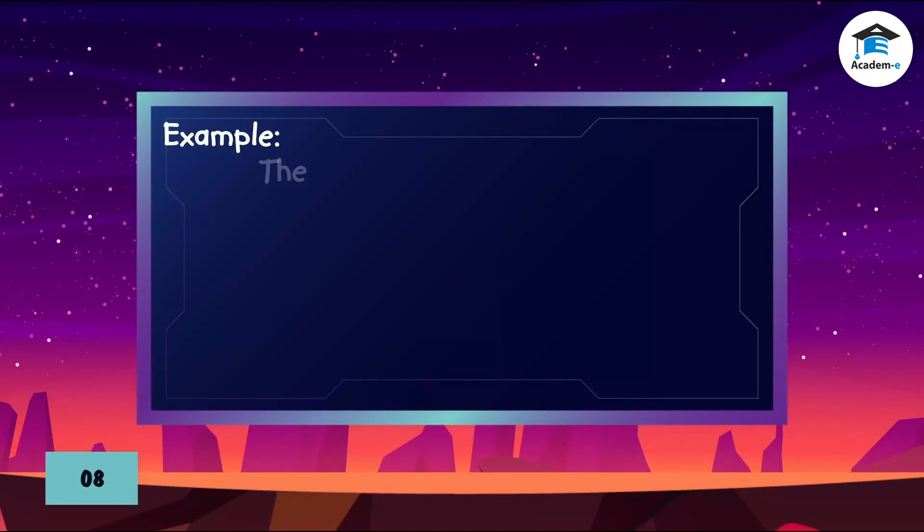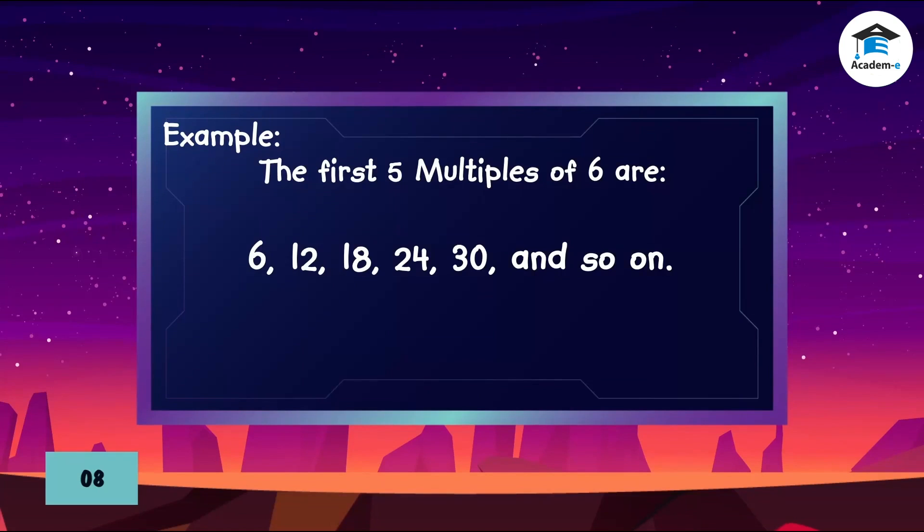For example, the first 5 multiples of 6 are 6, 12, 18, 24, 30, and so on.